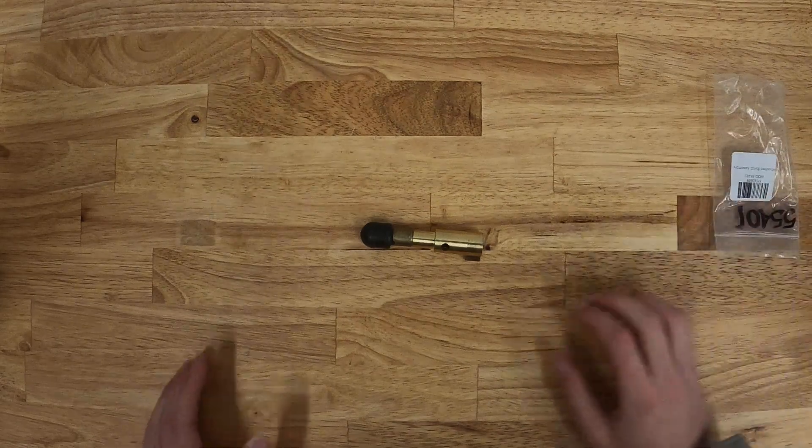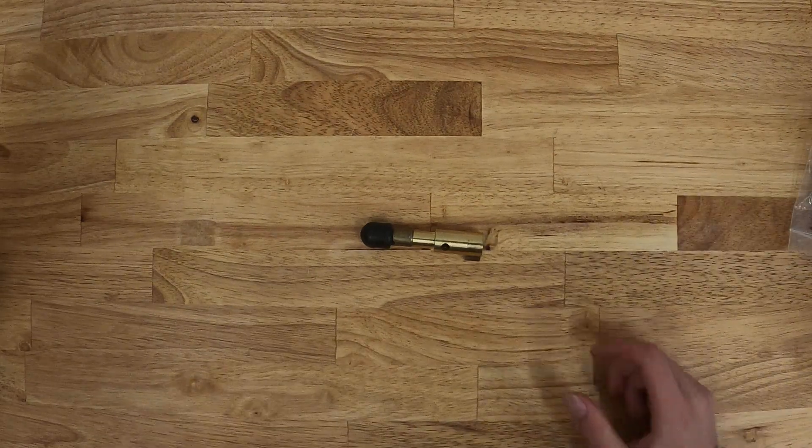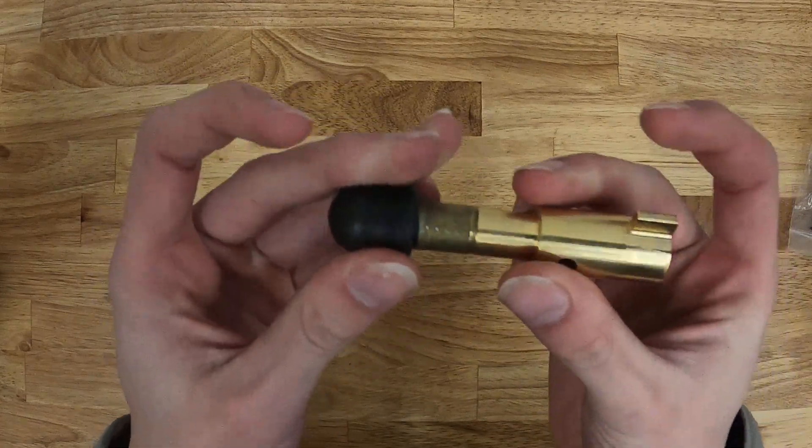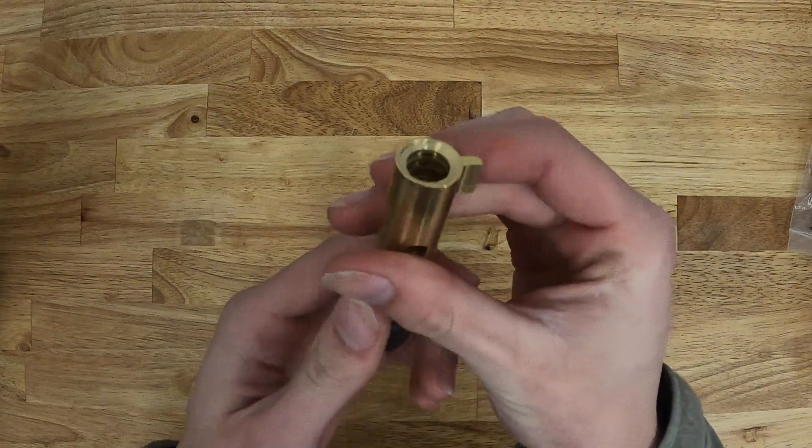When it comes to these stems, it really just depends on the length you're needing. As you can see, it'll come with the plunger here, which is all rubber, and the rest of the assembly here is brass.